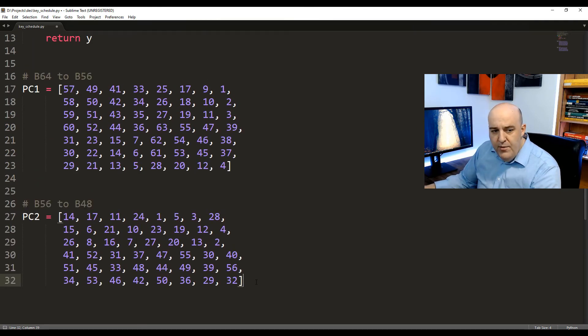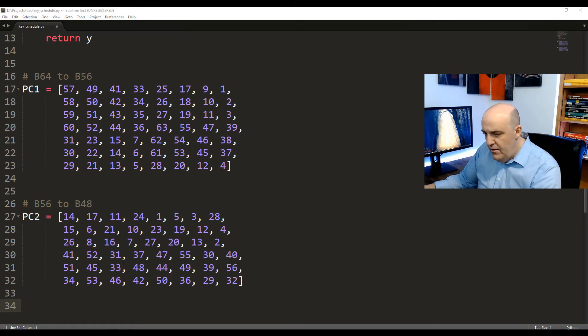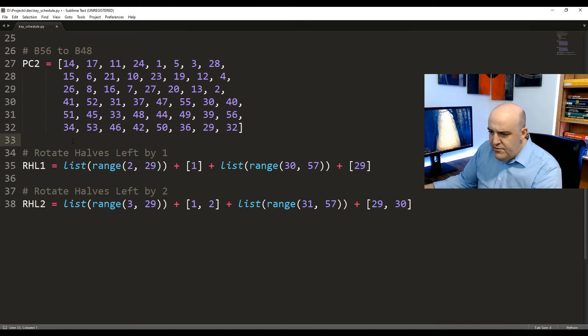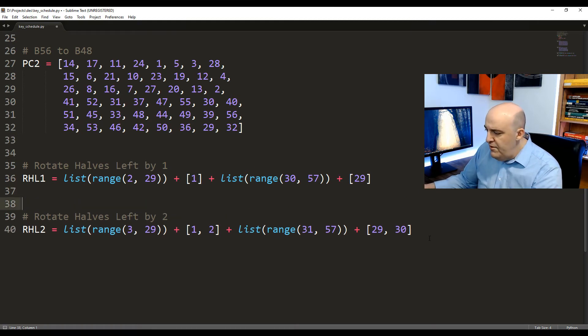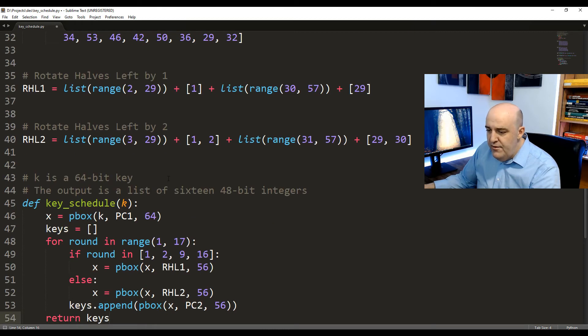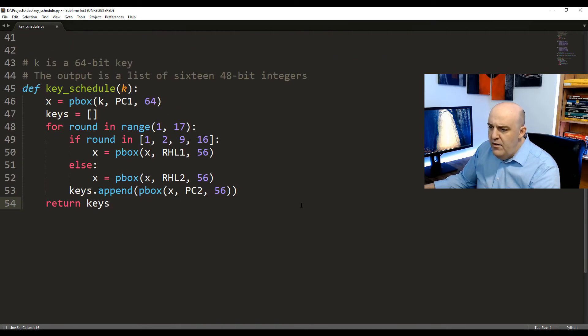Now, we also talked about the two P-boxes rotate halves left by one spot and by two spots. Let's also add those. And those are all the P-boxes we're going to need to implement the key schedule. And then the key schedule code is here. We looked at that as well. We just start off by taking our 64-bit key, putting it into PC1. And then we have our initial list that's empty. But in the end, it's going to return our 16 48-bit round keys. And then we go through the 16 rounds. If the round is one of these ones, we use RHL1. Otherwise, we use RHL2. And then that value of X is fed into the P-box PC2. And that is the round key for each round.